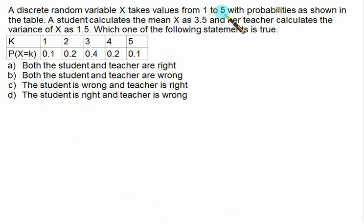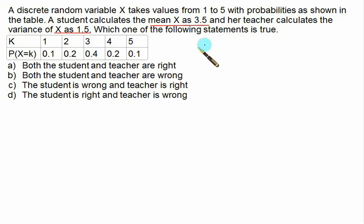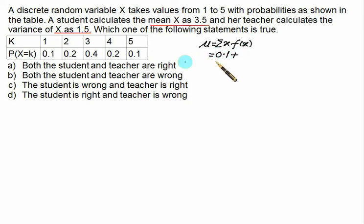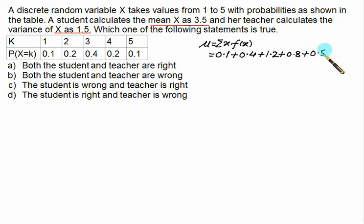This question appeared in a GATE examination. A discrete random variable x takes values from 1 to 5 with corresponding probabilities given. A student calculated the mean as 3.5 and the teacher calculated the variance as 1.5. We are given four choices to find which one is correct. First, we calculate the mean: mu equals 1 into 0.1 plus 2 into 0.2 plus 3 into 0.4 plus 4 into 0.2 plus 5 into 0.1, giving a mean of 3. So the student is wrong.